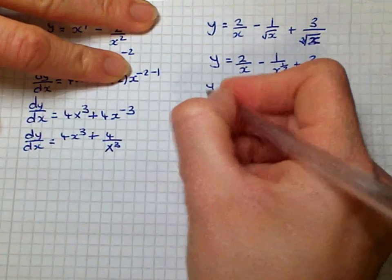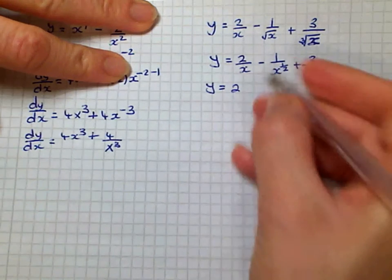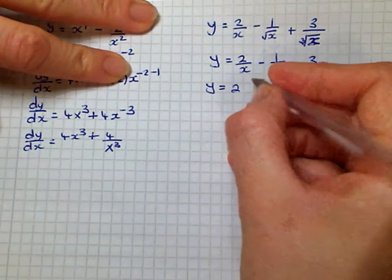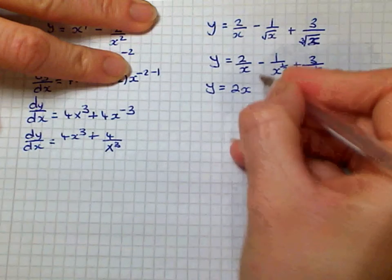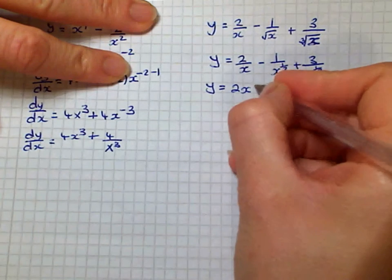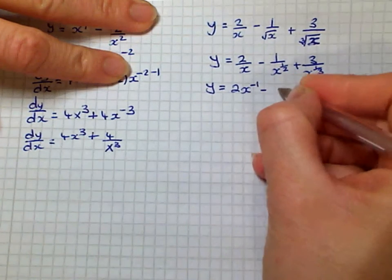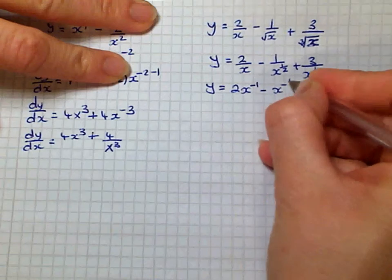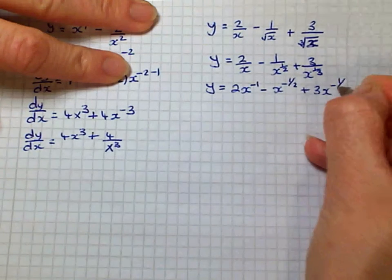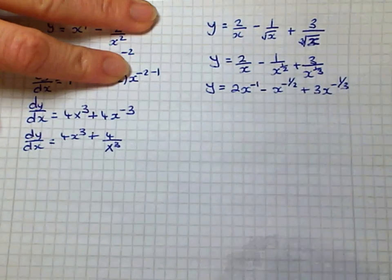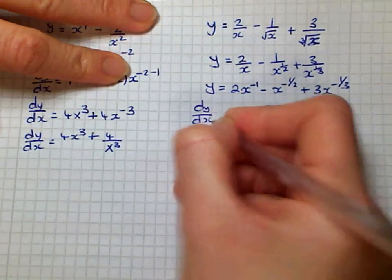The next thing before we differentiate is to bring up our indices, making them negative. So the expression becomes: 2x to the power of minus 1, minus x to the power of minus a half, plus 3x to the power of minus one third.